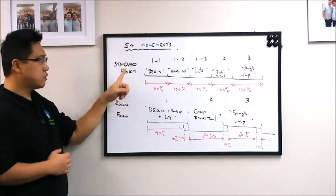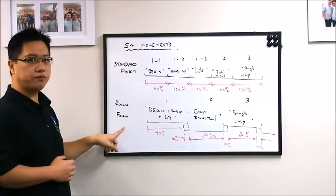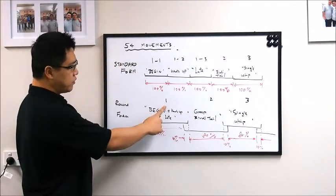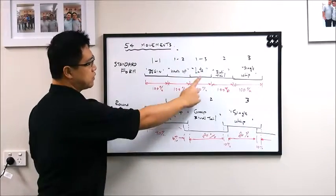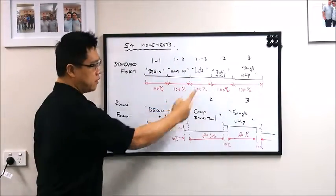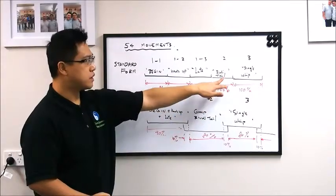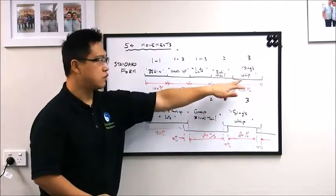This is because of the 54 movement round form. One is actually the combination of this 1, 2, 3, and 2 is the grasp bird's tail, and 3 is the single whip.